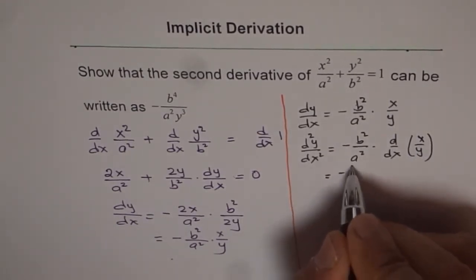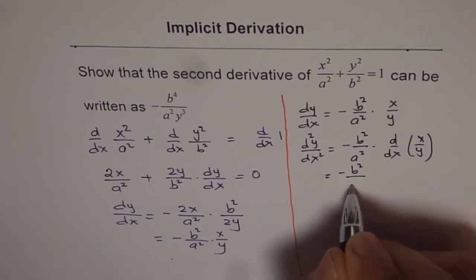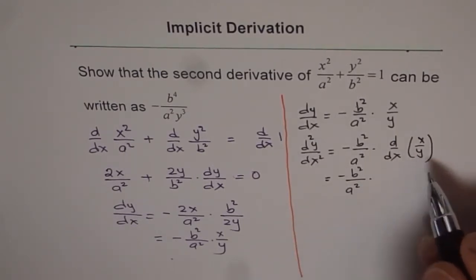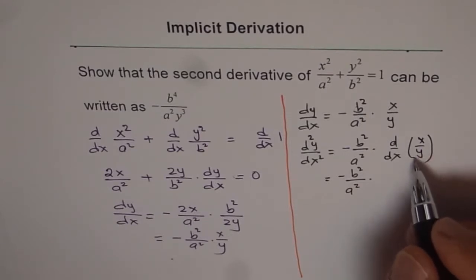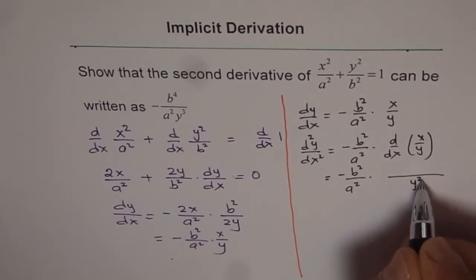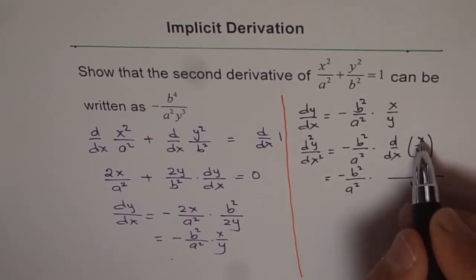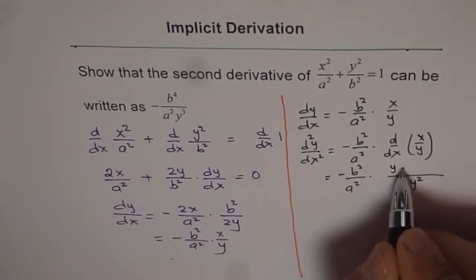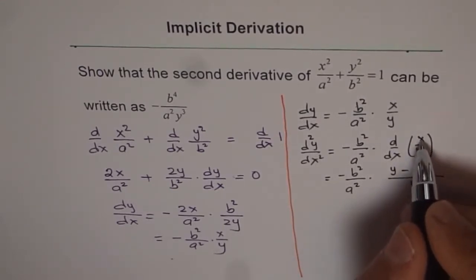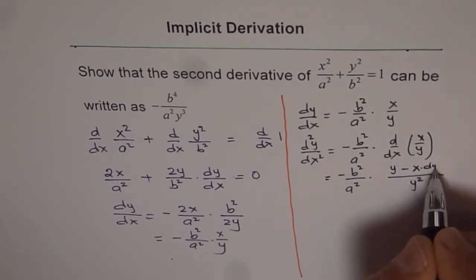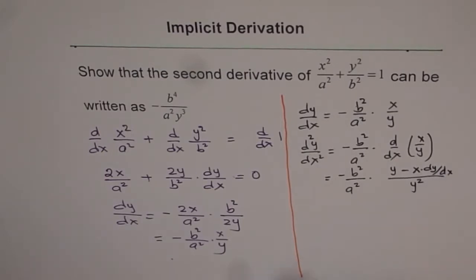We'll use the quotient rule. The quotient rule gives us: square of the denominator which is y squared, times the derivative of the first term — derivative of x is 1, so 1 times y is y — minus the first term times the derivative of the second term, which is x times dy/dx.